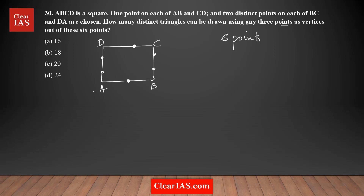To form a triangle, you just need three points. So if I'm taking any three of them, you will form a triangle — I'm taking these three and you will form a triangle. So you can select any three of them. The question is asking: out of the six points, how many ways can you select three of them?